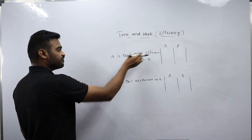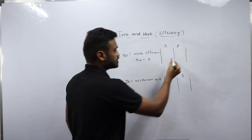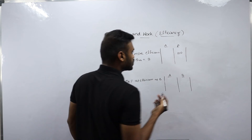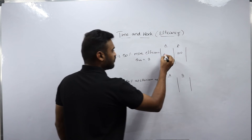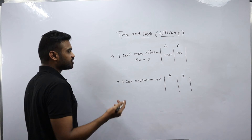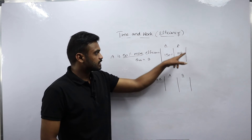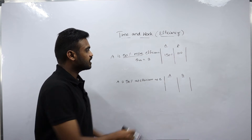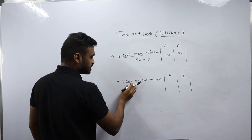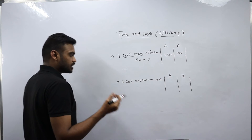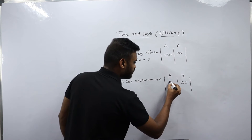For 'A is 50% more efficient than B': if I consider B's total efficiency as 100%, then A's efficiency will become 150%. For 'A is 50% as efficient as B': if B's efficiency is 100%, A's efficiency will become 50%.